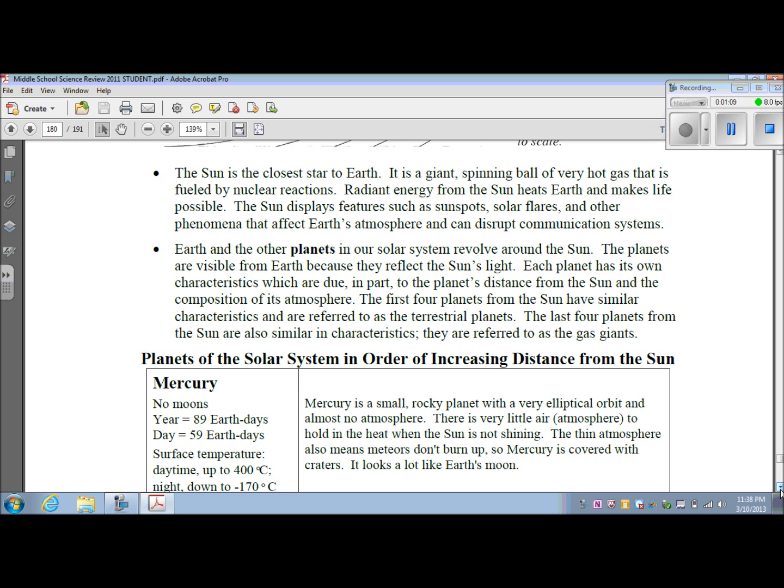Earth and other planets in our solar system revolve around the Sun. The planets are visible from Earth because they reflect the Sun's light. Each planet has its own characteristics, which are due in part to the planet's distance from the Sun and the composition of its atmosphere. The first four planets from the Sun have similar characteristics and are referred to as the terrestrial planets. The last four planets from the Sun are also similar in characteristics. They are referred to as the gas giants.